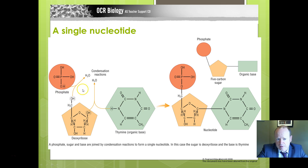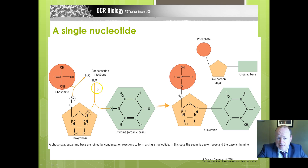Here we can see the phosphate group with the hydrogen and the hydroxyl joining together to make a molecule of water, bonding to carbon 5. At carbon 1, you've got the nitrogenous base — in this case, thymine. Again, same condensation reaction, hydroxyl and hydrogen making water, and they join up to become a fully fledged nucleotide. In this case it would be a thymine nucleotide, and it must be for DNA because this is deoxyribose rather than ribose — there's no oxygen joined to that carbon.